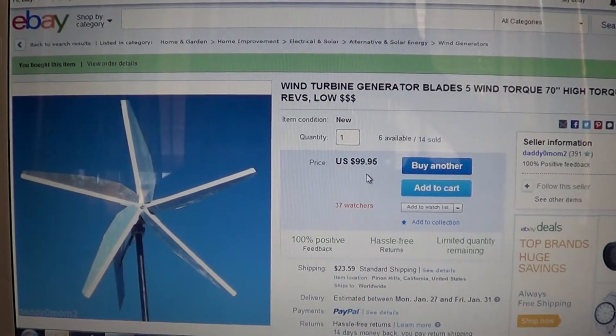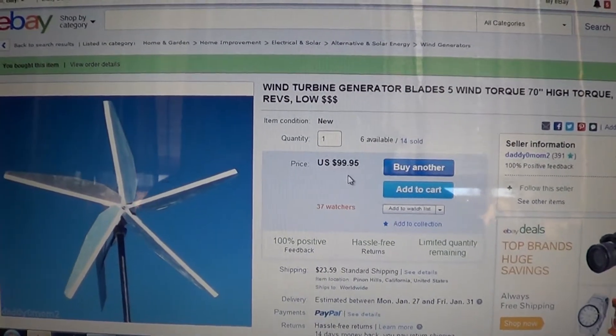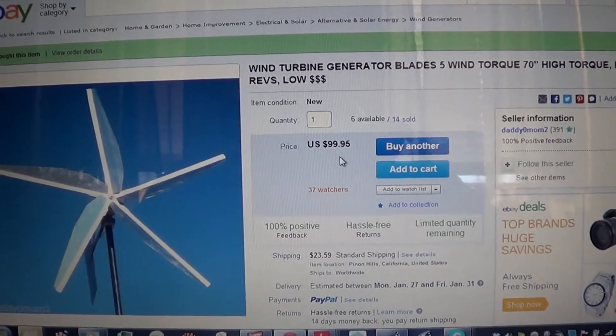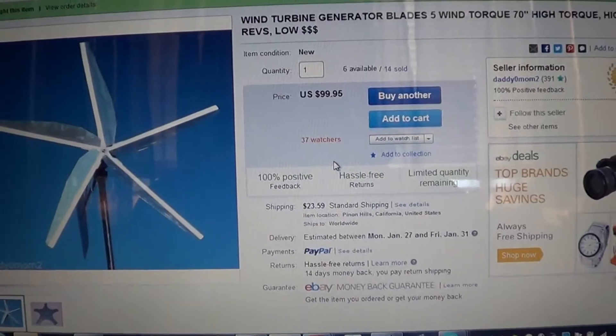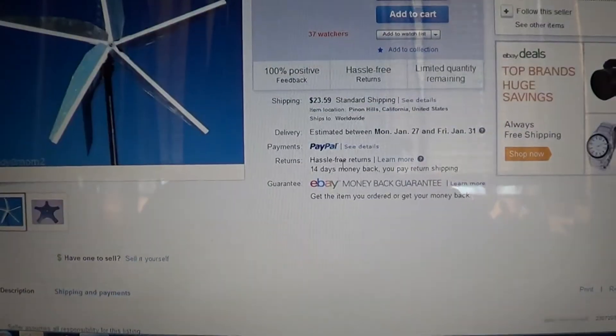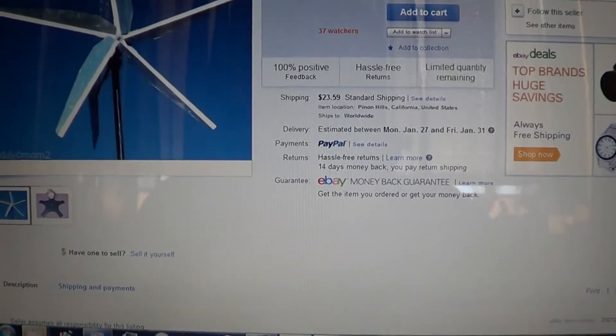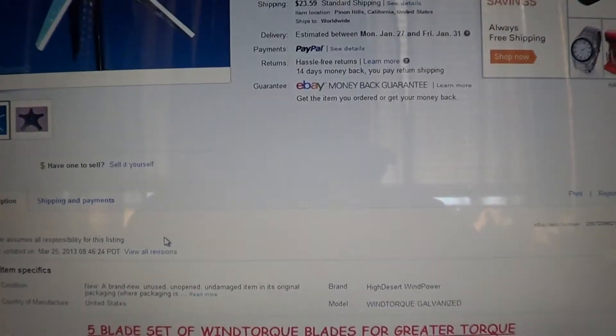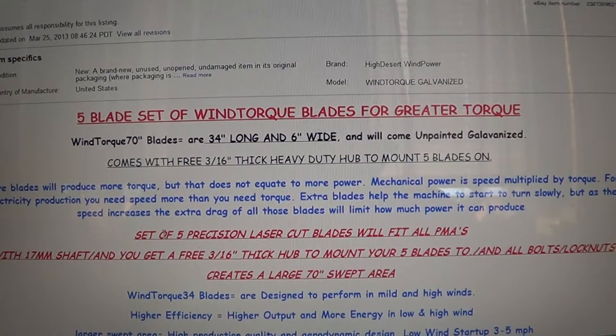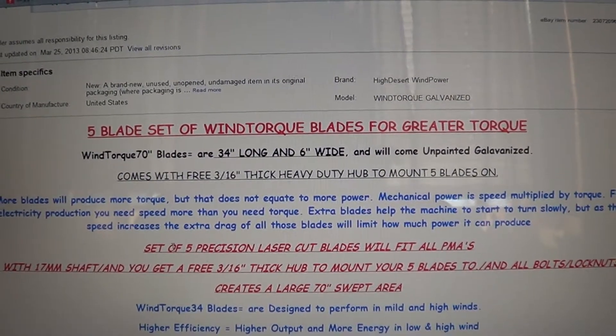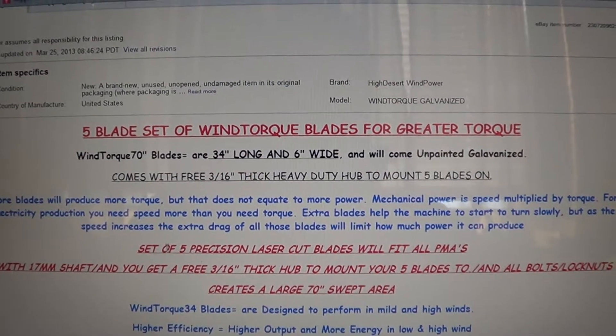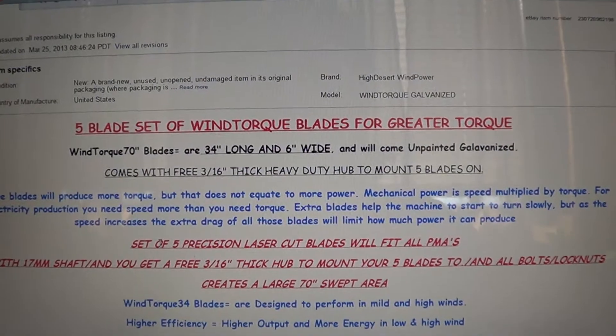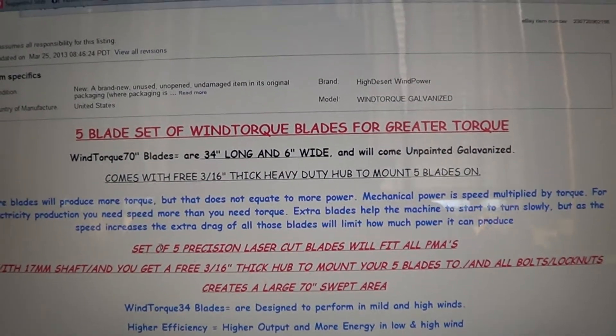Hey everybody. This is the new kid on the block, kind of, sort of, in a way. I guess, you know. Daddy-O-Mom too on eBay. I want to tell you that these blades are awesome. The hub in itself is powder coated. It's a five blade set here.